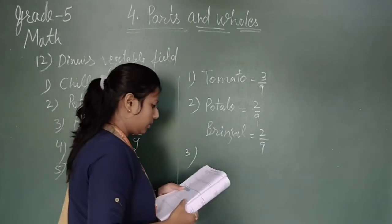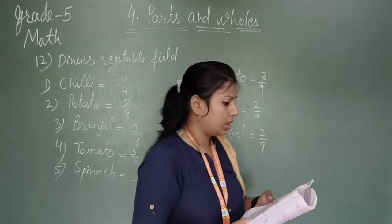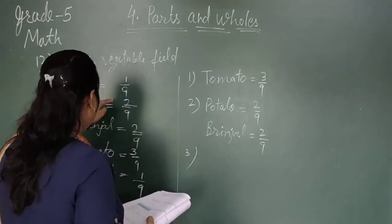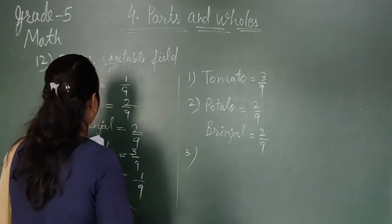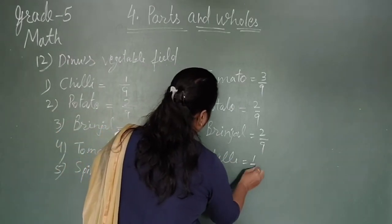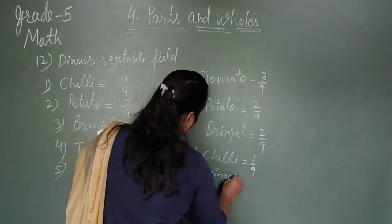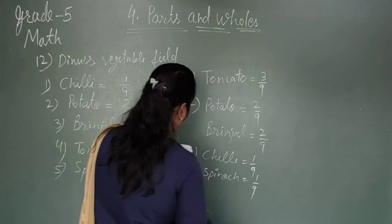Question number 3: What part of the field is used to grow spinach and chilli? Spinach and chilli both have equal parts. Chilli having one upon nine, and spinach also having one upon nine.